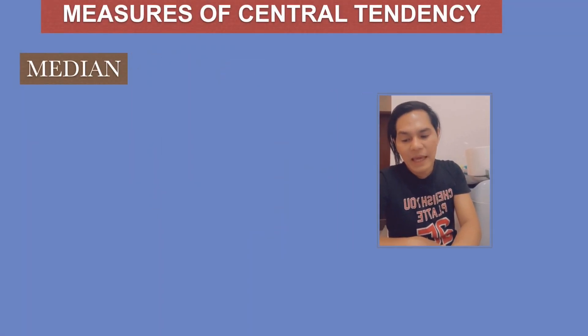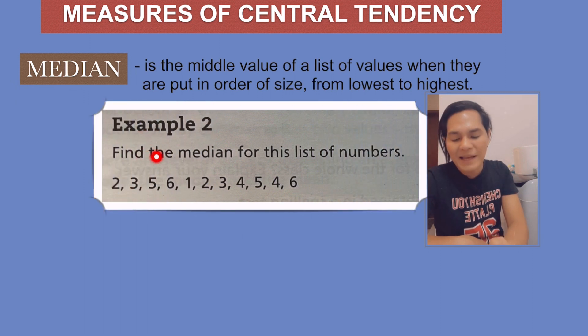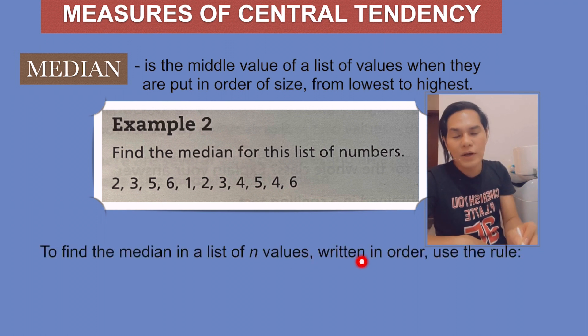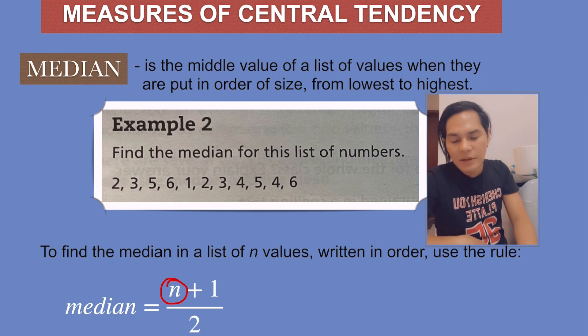Up next is the median, and it is the middle value of a list of values when they are put in order of size, from lowest to highest. For example, find the median for this list of numbers. To find the median in a list of n values written in order, use the rule: median equals n plus 1 divided by 2. n is how many numbers are in the given data. So in this case, the first thing to do is arrange the numbers from lowest to highest. There you go.